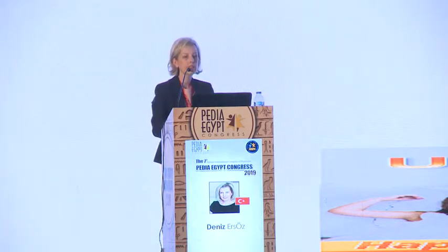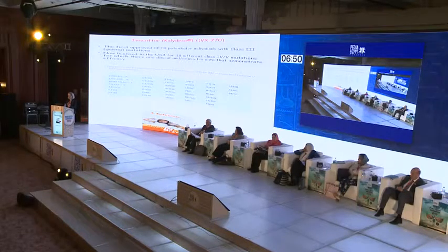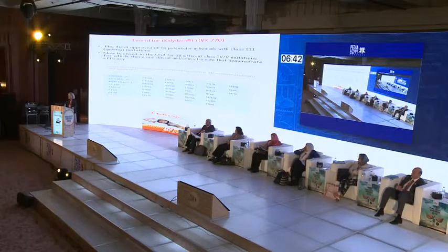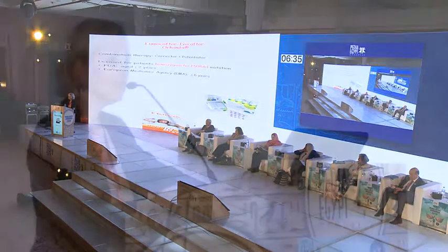There are combination therapies of correctors plus potentiators, which both increase the density of CFTR and increase channel opening at the surface. Until now, only three drugs are currently licensed: ivacaftor; lumacaftor plus ivacaftor combination; and tezacaftor plus ivacaftor combination. Ivacaftor is the first approved CFTR modulator drug, especially for class 3 mutations, and is now licensed in the U.S. for 32 different class 4 and 5 mutations. Lumacaftor plus ivacaftor has a special license for patients who are homozygous for the Delta F508 mutation.